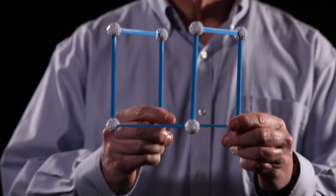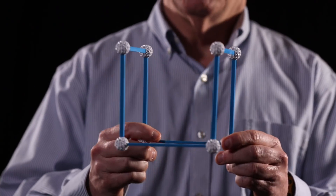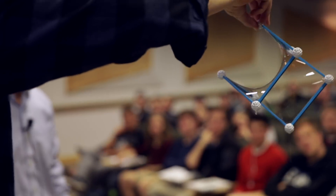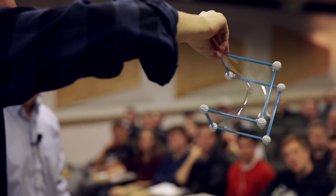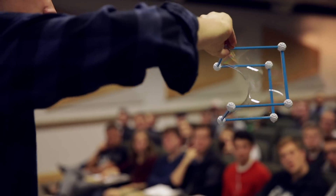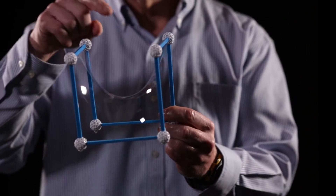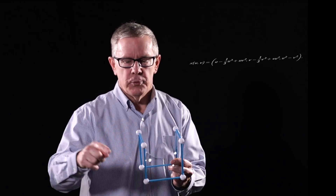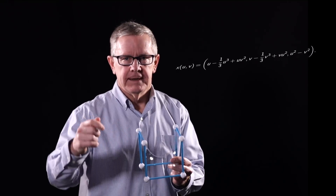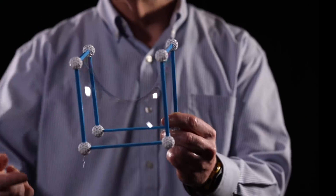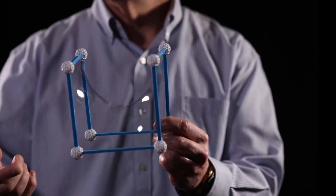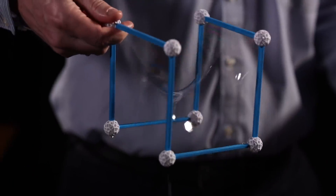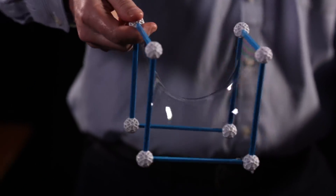We can extend this to a higher dimension. We get this minimal surface that looks like a saddle. At each point, the bending upward is matched with the bending downward in a perpendicular direction. However, the amount of bending is the same.